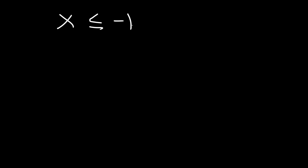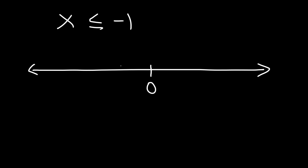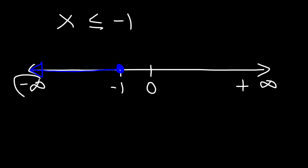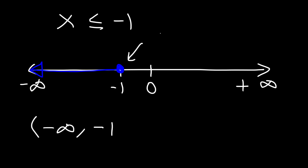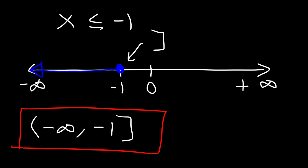Try this one: let's say that x is less than or equal to negative 1. So let's start with a number line — here's 0, and negative 1 is to the left of 0. Let's put the infinity symbols. This time, it includes negative 1, so we're going to use a closed circle. And because it's less than negative 1, let's shade to the left. The left side has negative infinity, and the right side has negative 1. Use parentheses for the infinity symbol, and because we have a closed circle, this is going to contain a bracket. So it's from negative infinity to negative 1, including negative 1 — written as (-∞, -1].